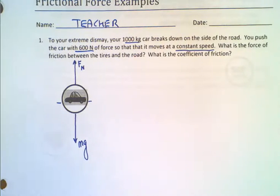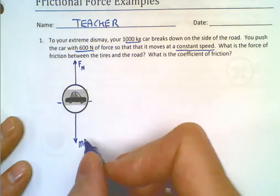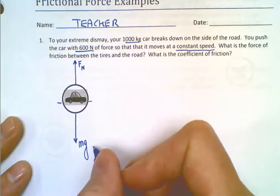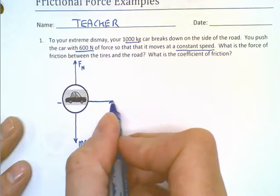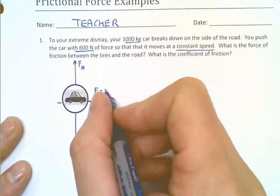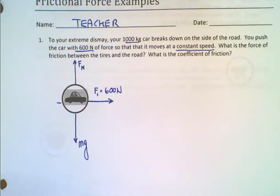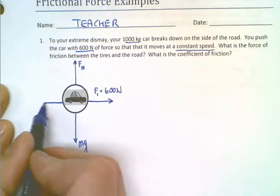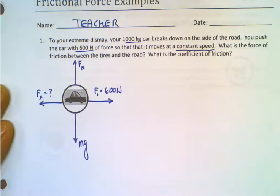Now, since there's no other forces pushing up or pushing down, we know that the normal force must balance perfectly with the gravitational force. So whatever the value of the gravitational force is, we know that would be the value of the normal force. Now, it says here that you're pushing the car with 600 N. So I'm going to push the car, F subscript 1, 600 N. And the question is, what is the force of friction?